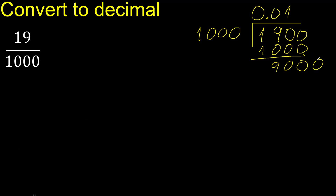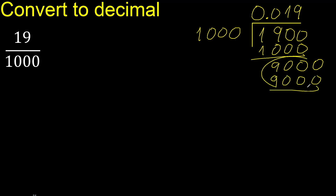Therefore complete — always complete with zero. One thousand, multiply by which number? Multiply by nine. Subtract — zero. Therefore finish.